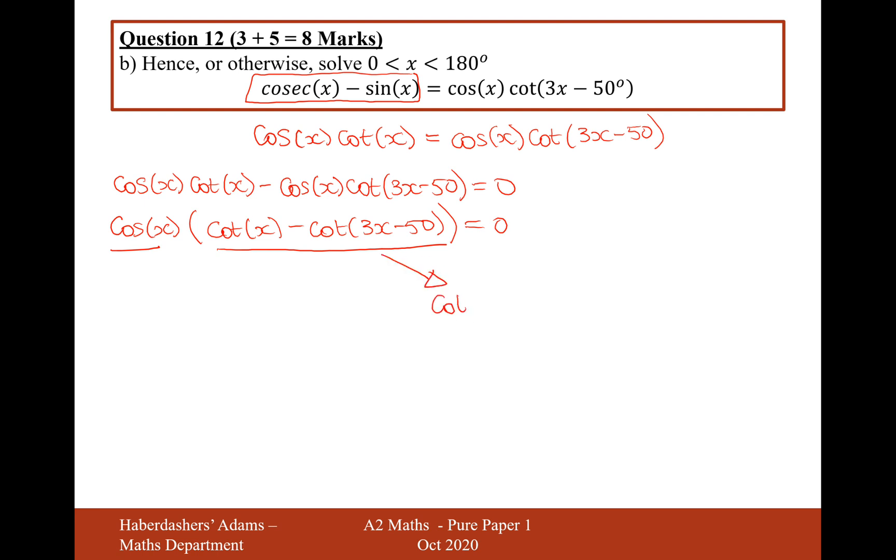Let's concentrate on this right hand one first. This is a bit more tricky than the left hand bit. So we've got this expression equals 0, so therefore the two bits must be equal to each other. So cot x and cot 3x minus 50 must equal each other. So if we've got cot and cot, then x could equal 3x minus 50. Just getting rid of the cot on both sides. If we rearrange this, we're going to get 50 equals 2x and then 25 equals x.